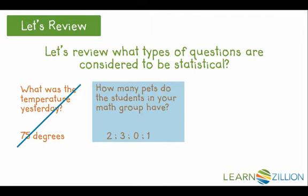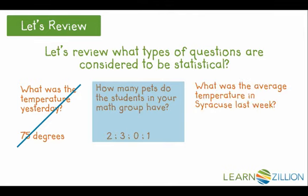The last question asks for the average temperature in Syracuse last week. At first, this may seem like a question that only involves one number. The answer is 79. However, because it takes seven numbers to make up a weekly average, we do see a variation in answers. So this is a statistical question.